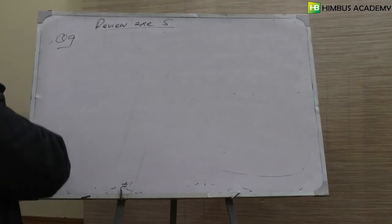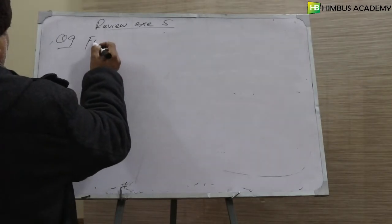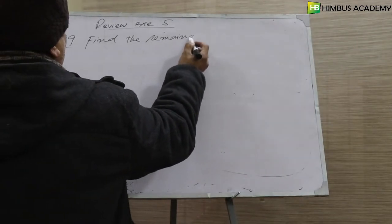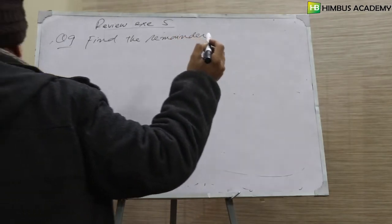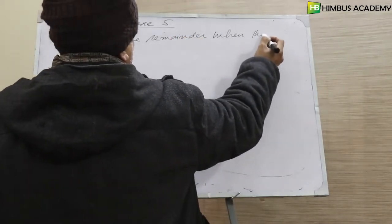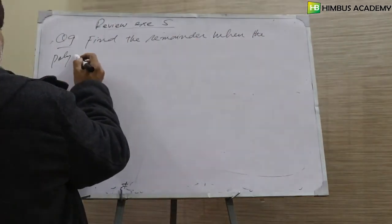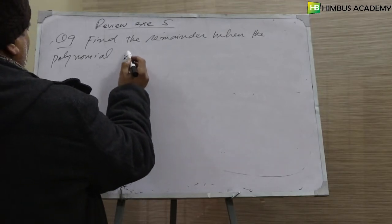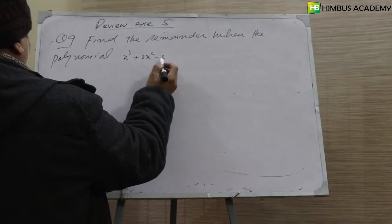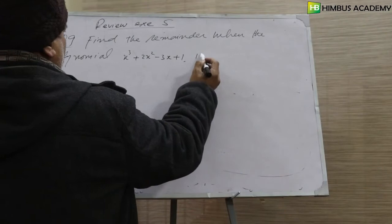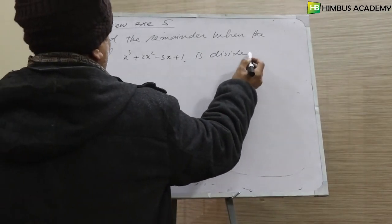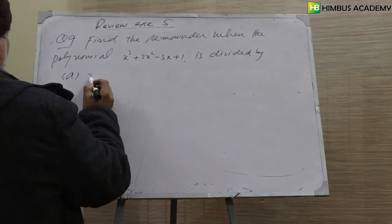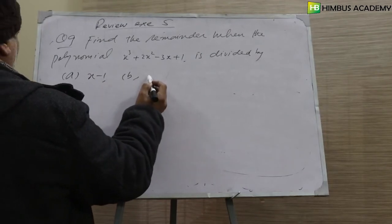Question number 9: Find the remainder when the polynomial x³ + 2x² - 3x + 1 is divided by (a) x - 1 and (b) x + 2.